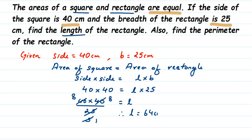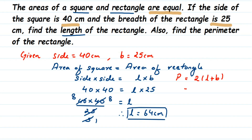We got the length — 64 centimeters. The first part of the question is done. Now let's find the perimeter of the rectangle. Perimeter P = 2 × (L + B). Substituting: P = 2 × (64 + 25). Adding 64 and 25 gives 89, so P = 2 × 89 = 178 centimeters.